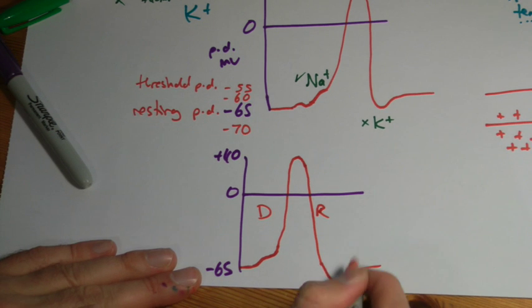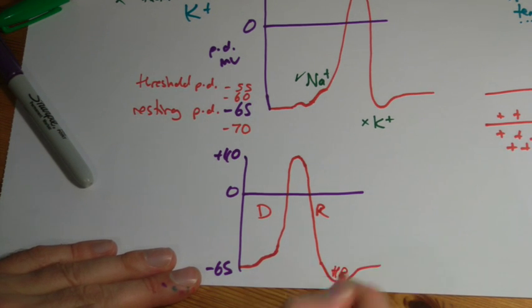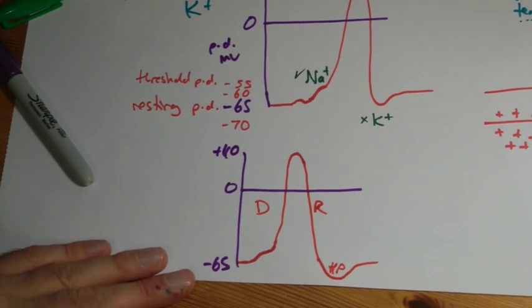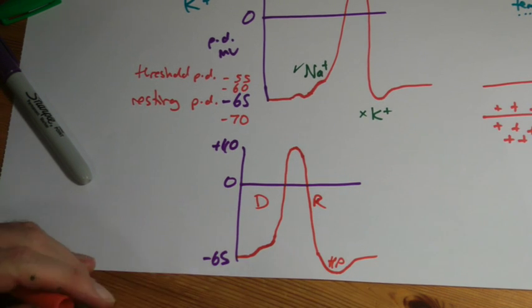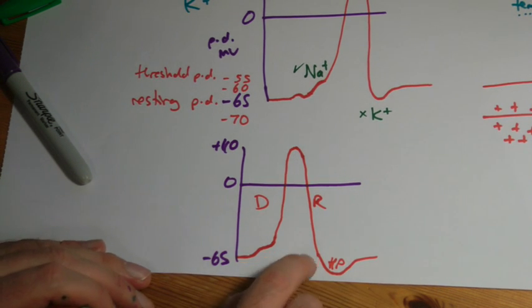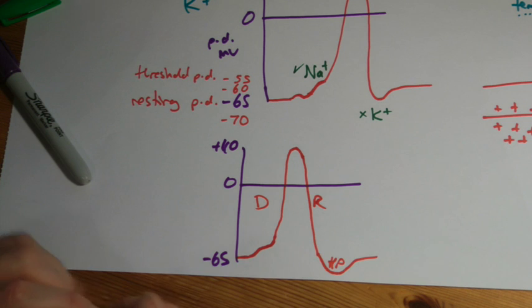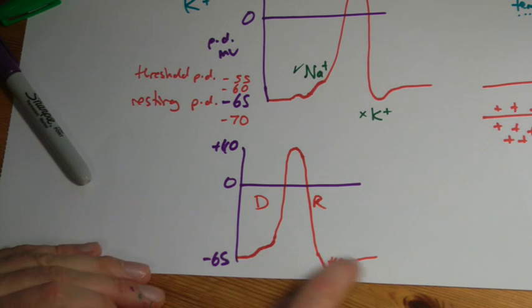And that little drop down there is hyperpolarization. Hyper meaning above. And you might say, oh, it's gone below. Yes, but we're dealing with negative numbers. It's gone more negative. So it's not hypopolarization. It's hyperpolarization.